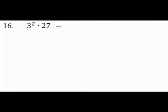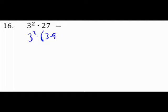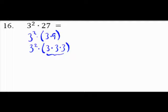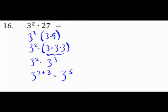Number 16: 3 squared times 27. Since 27 is not prime, break it down: 27 equals 3 times 9, and 9 equals 3 times 3. So we have 3 squared times 3 times 3 times 3, which is 3 squared times 3 to the third power. Using the Product of Powers Rule — same base of 3 — add the exponents: 2 plus 3 equals 5. The answer is 3 raised to the fifth power.